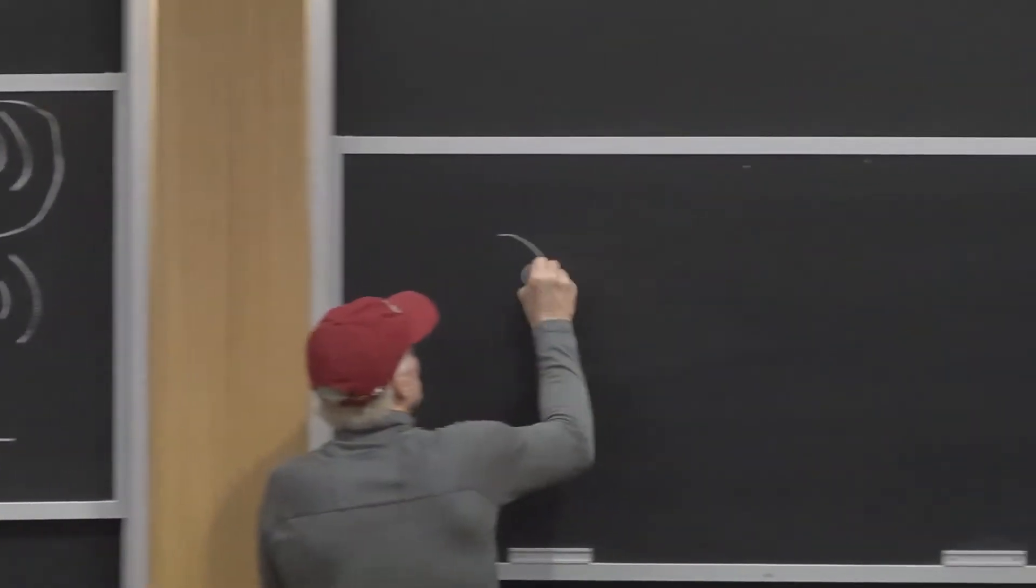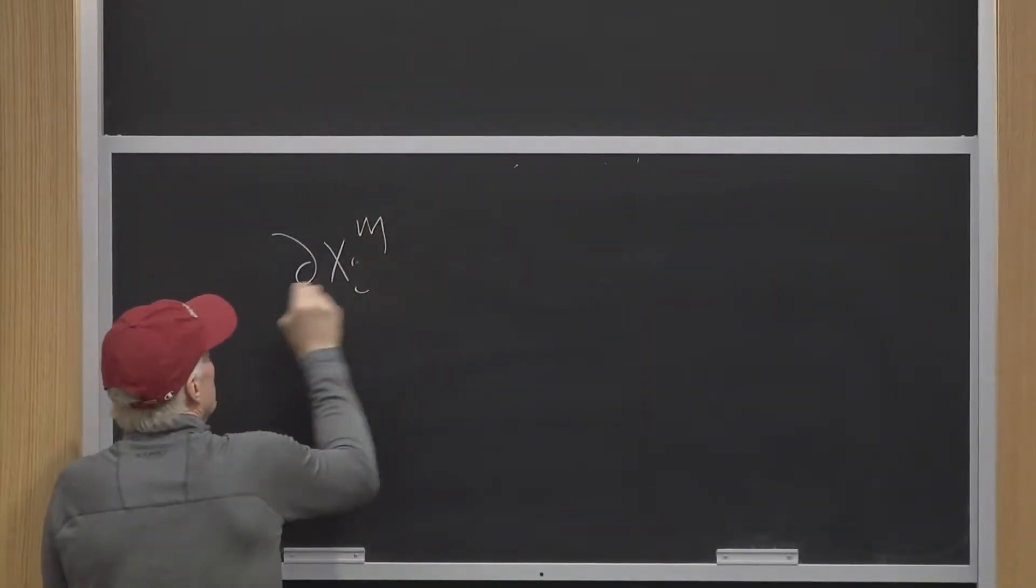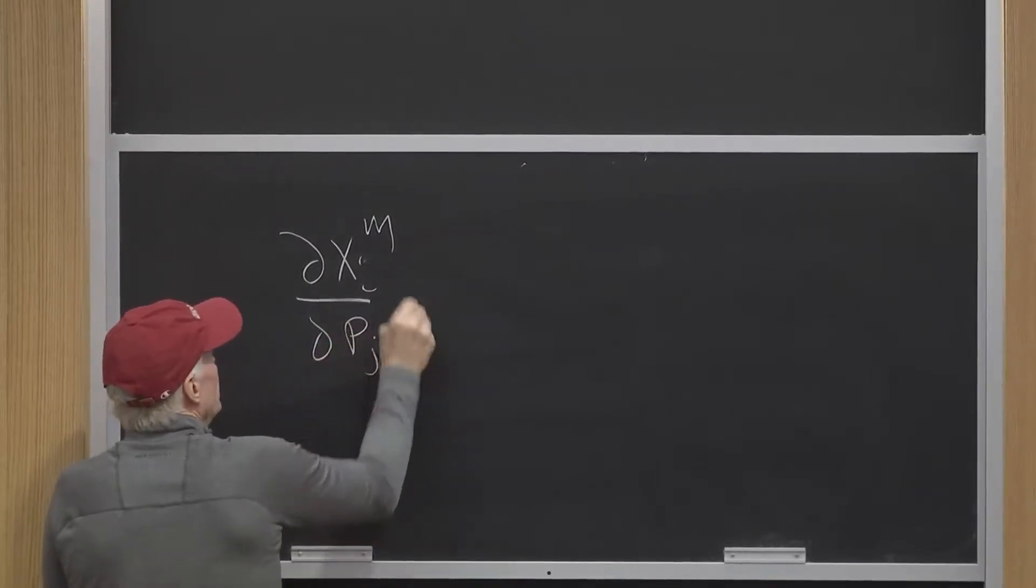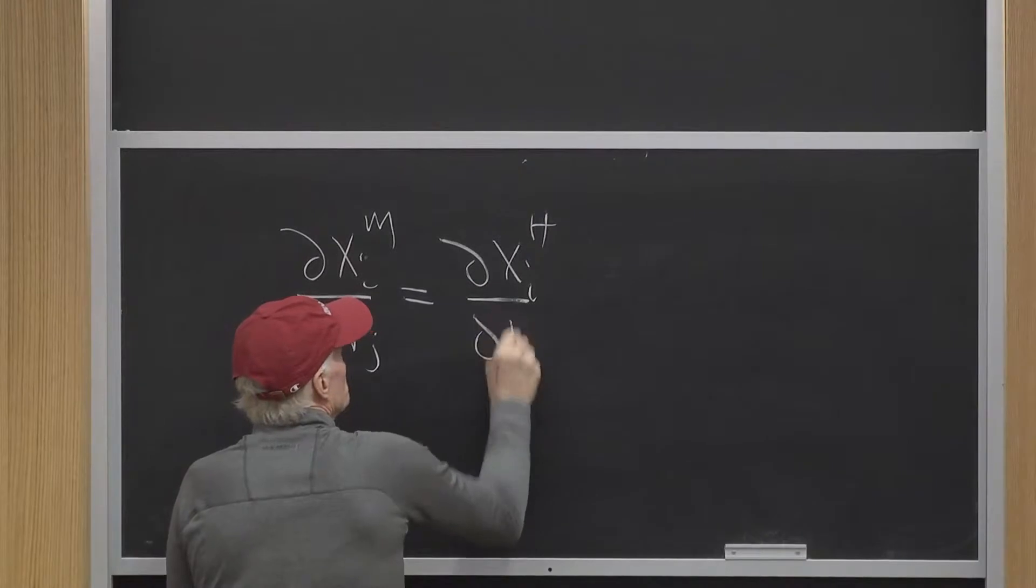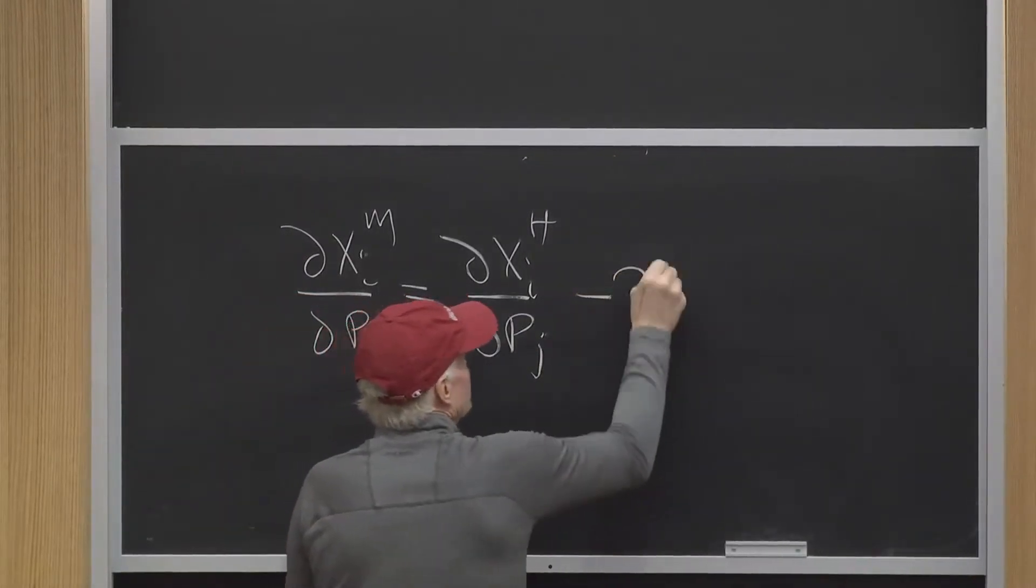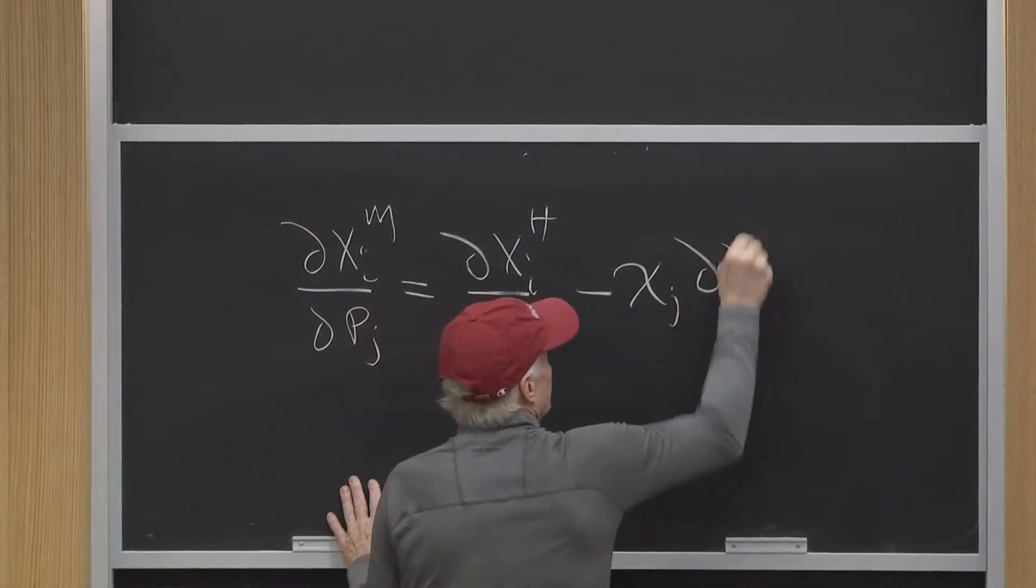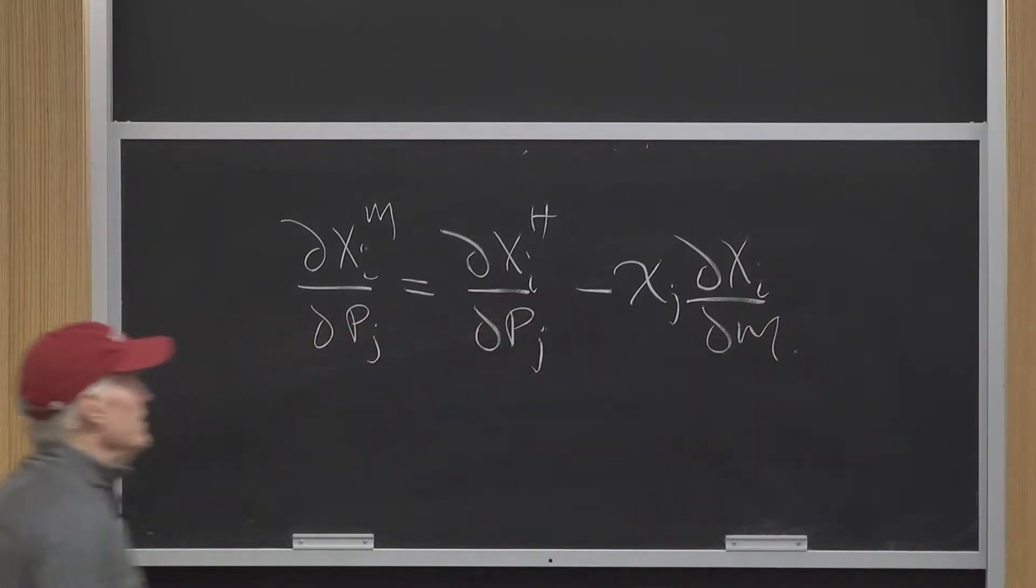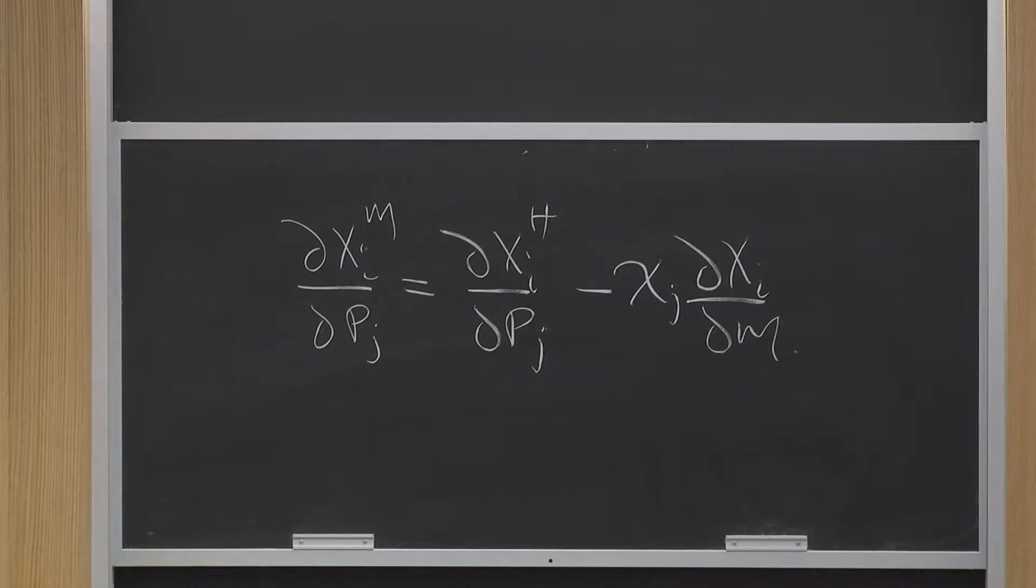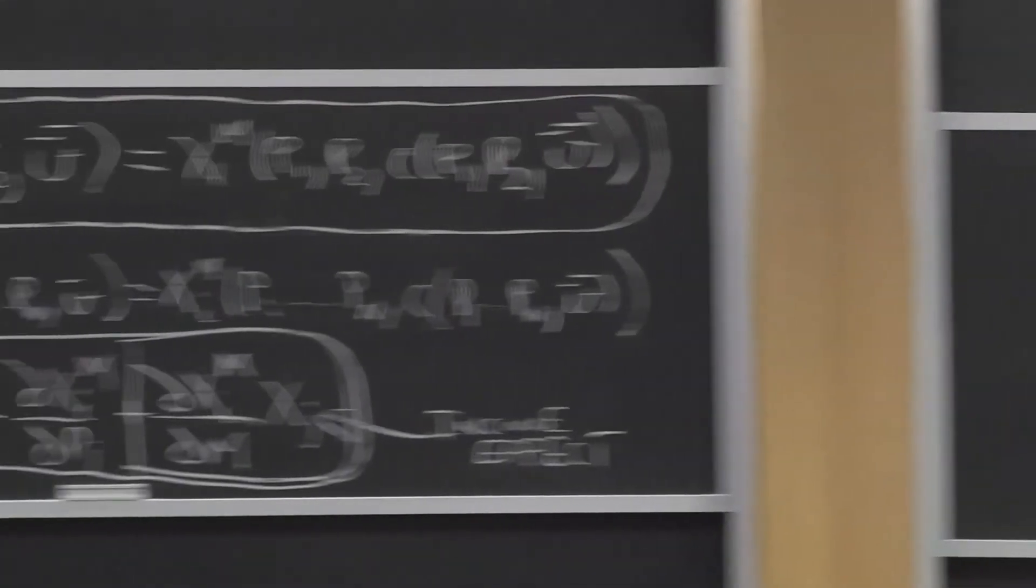So I'm going to write partial XIM partial PJ equals partial XIH partial PJ minus XJ partial XI partial M. So that's the rewritten version of the Slutsky equation, just moving this over to the other side.